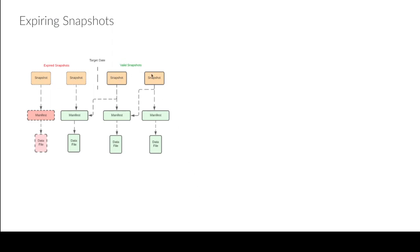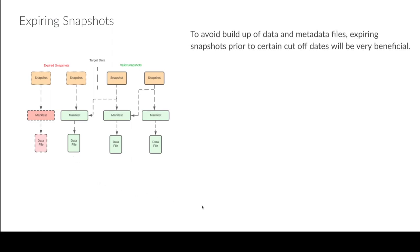Essentially, every time you update an Iceberg table you get a new snapshot. If you say expire all snapshots before a certain date, it'll expire those snapshots. Then it looks at all the manifests and sees which manifests are no longer associated with an active snapshot — those get deleted. Same thing with data files: it checks whether any data files are still associated with valid snapshots, and the ones that aren't get deleted. This cleans up a whole bunch of files, but you won't be able to time travel to those expired snapshots.